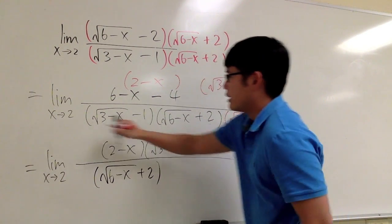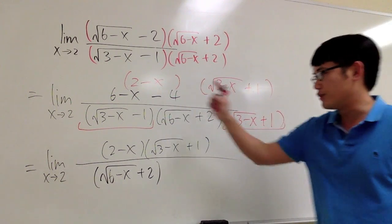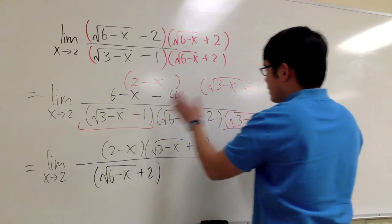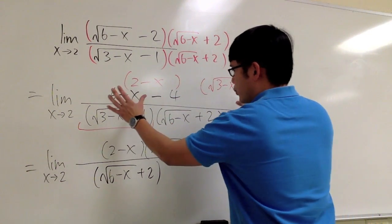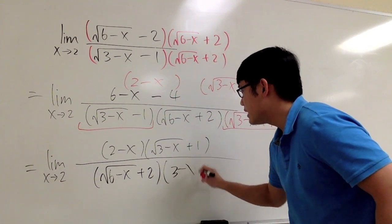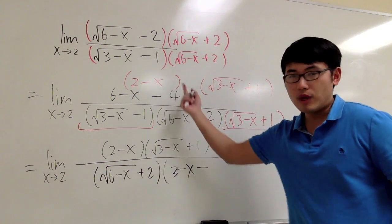And now we are going to multiply out this and that, because the conjugate was to fix that. A minus b times a plus b. In another word, we have that squared, which is just 3 minus x minus the second thing squared, which is 1.